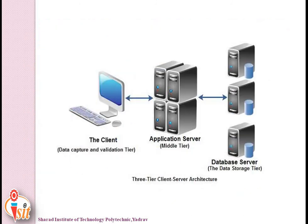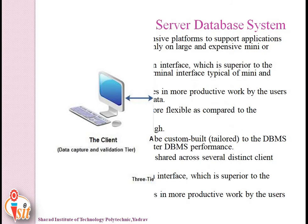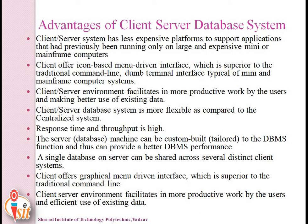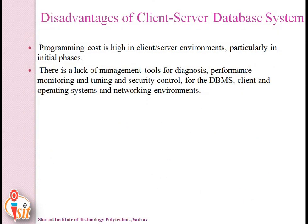In the three-tier architecture, the client (data capture and validation tier) is the first level, the application-level server is the middle tier, and the database server where data storage is done is the third tier. Advantages include less expensive platform, flexible response time, high throughput, graphical menu-driven interface, more productive work by users, and efficient use of existing data. Disadvantages include high programming cost and lack of management tools for diagnosis, performance monitoring, tuning, and security control.